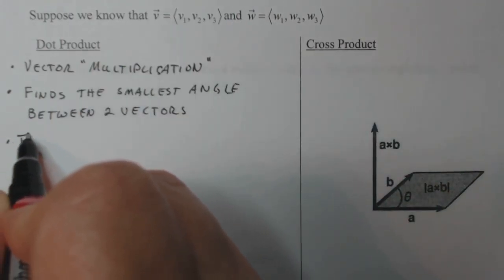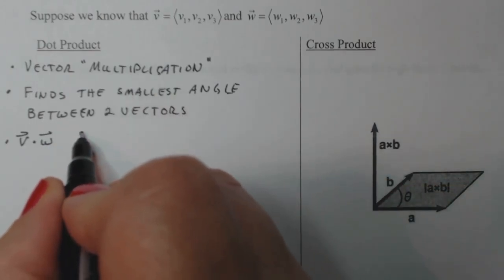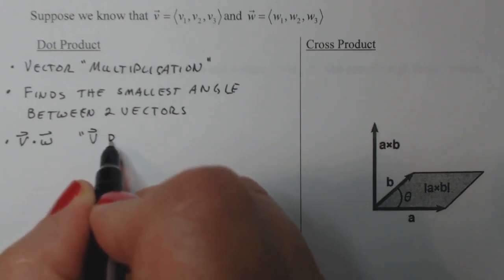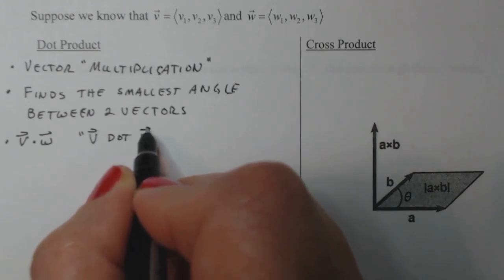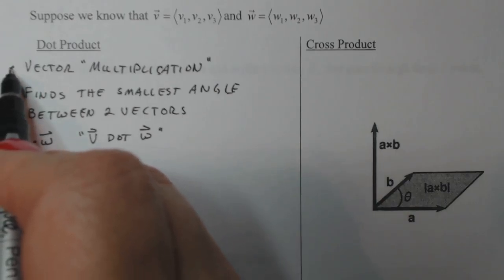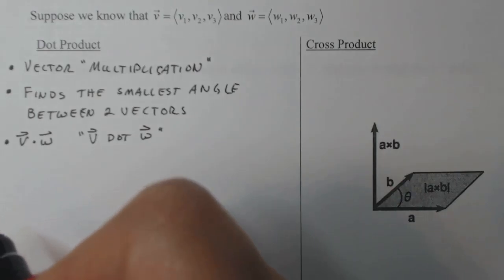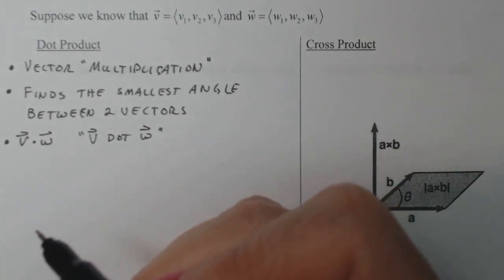When I write this down on a piece of paper, I don't say V times W, I say V dot W. So this is pronounced vector V dot vector W. These dots here have nothing to do with dot product; they're just bullet points. The dot for dot product is a bigger dot than what you would use in multiplication of real numbers.